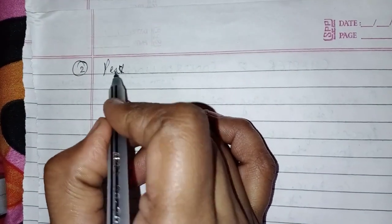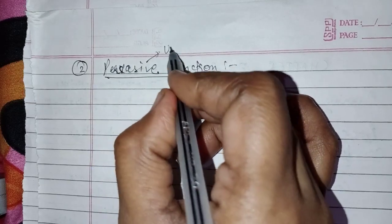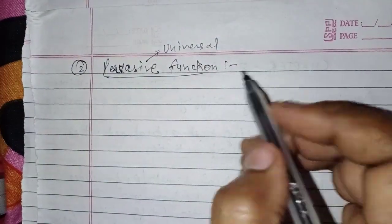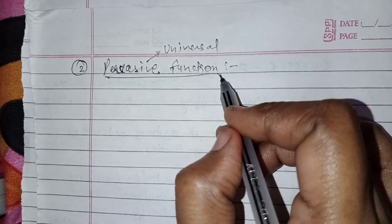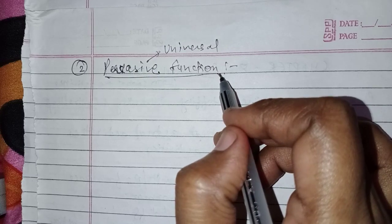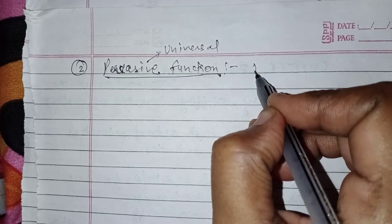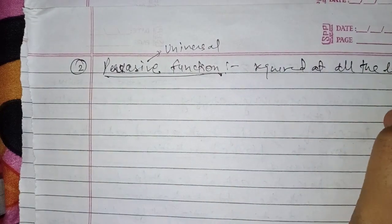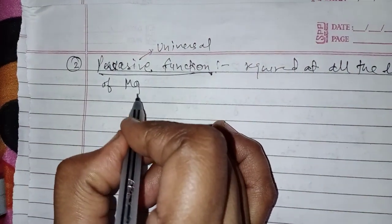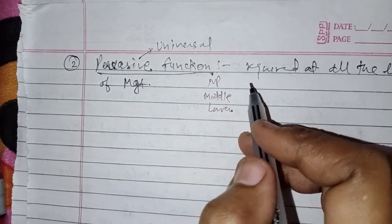The second feature is the pervasive function. What do you mean by pervasive? Pervasive means universal — required everywhere. We have learned that management is universal, management is a pervasive function. In the same way, controlling is also a pervasive function for each manager, because it is required at all the levels of management — whether we are at the top, middle, or lower level. In all levels, our controlling function is performed.